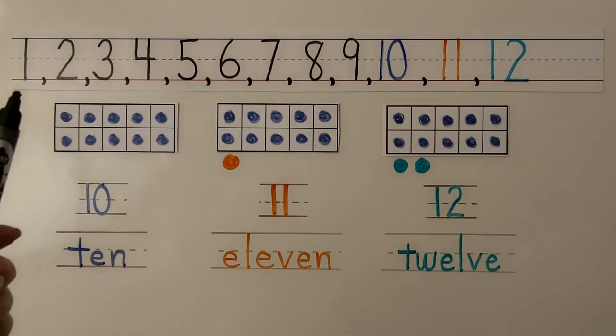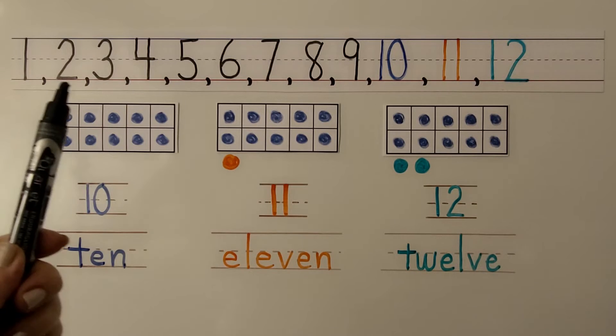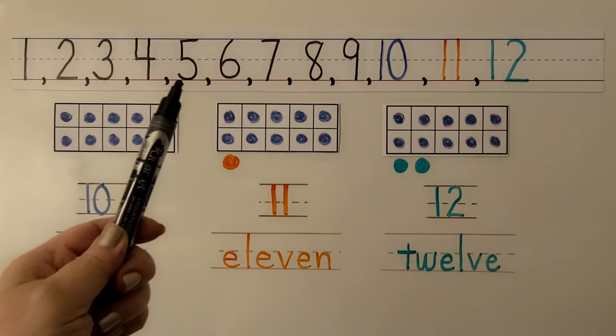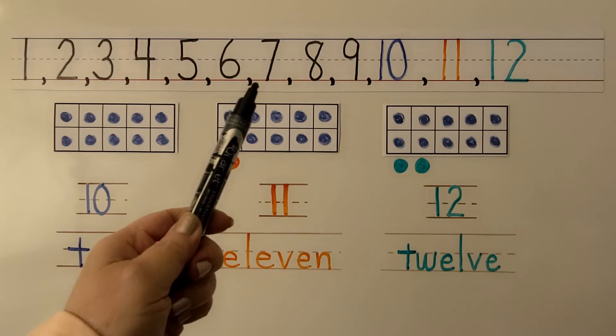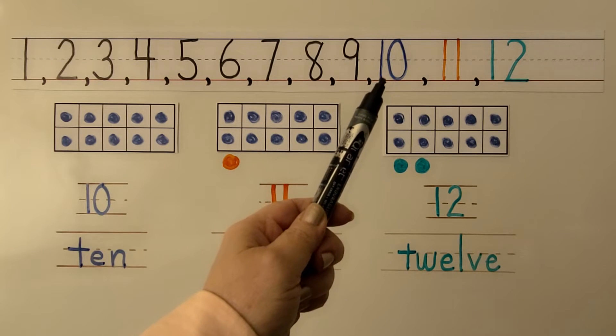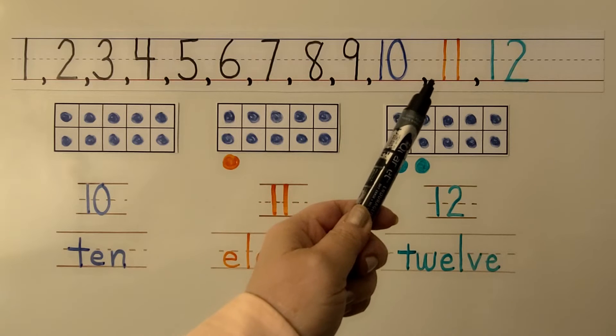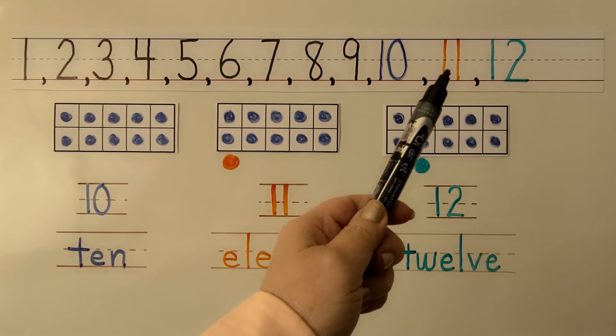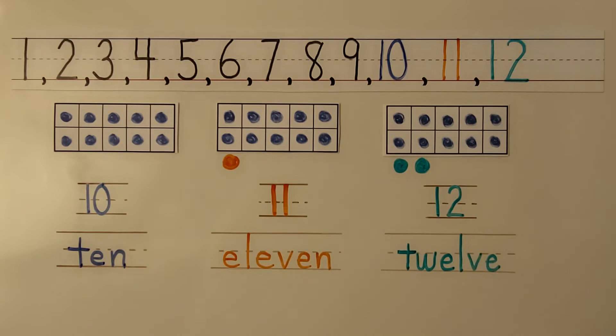Here we have the numbers in counting order: one, two, three, four, five, six, seven, eight, nine, ten. One more than 10 is 11, and one more than 11 is 12 in counting order. 11 is the next number after 10 in counting order. 11 is one more than 10.